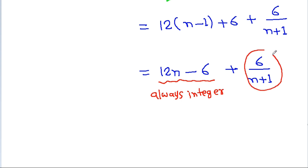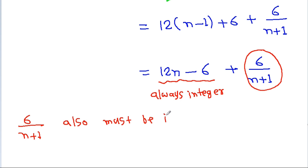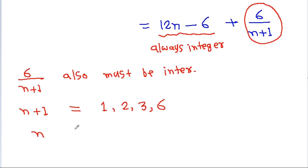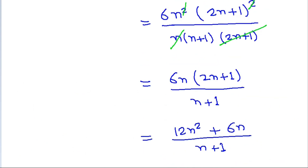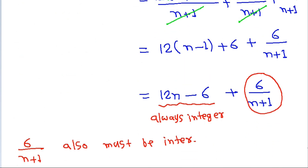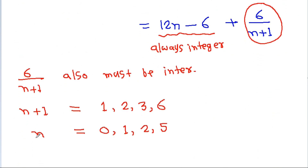So 6/(n+1) must be an integer, which means n+1 must be a divisor of 6. So n+1 equals 1, 2, 3, or 6, giving n equals 0, 1, 2, or 5. Since n cannot be 0, we get n equals 1, 2, and 5.